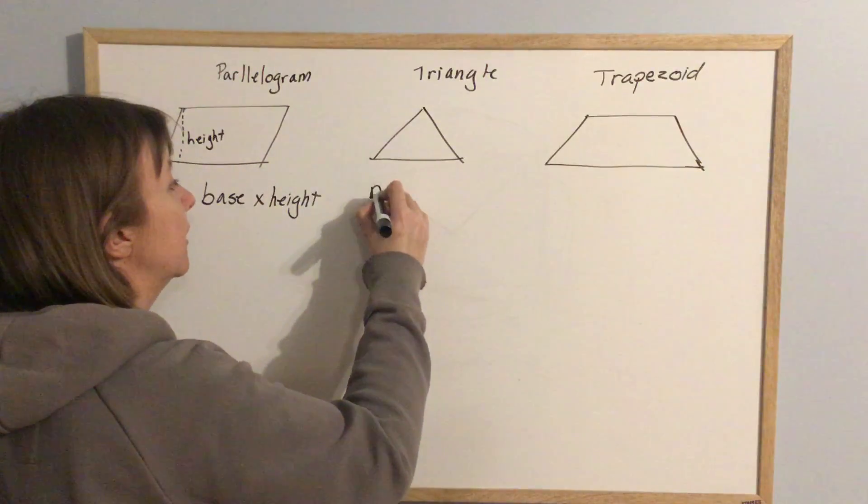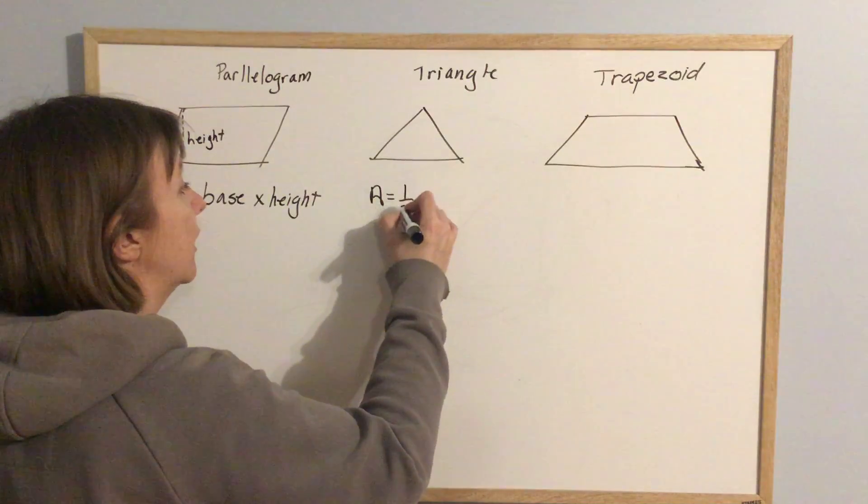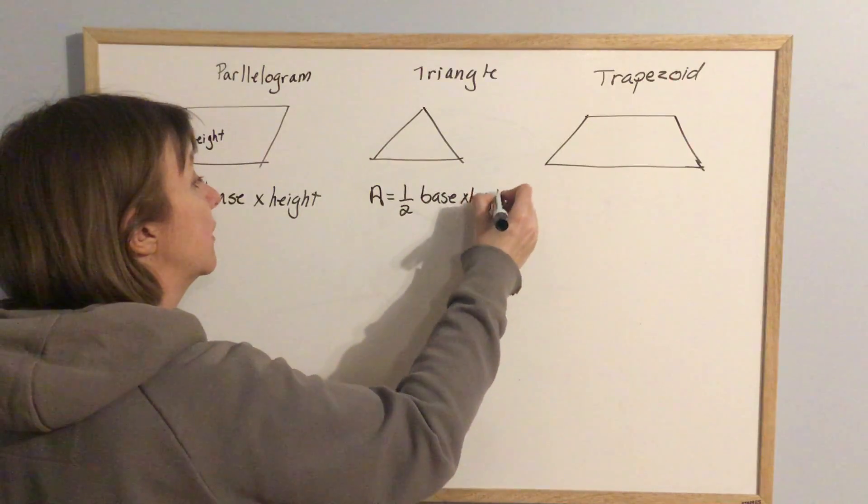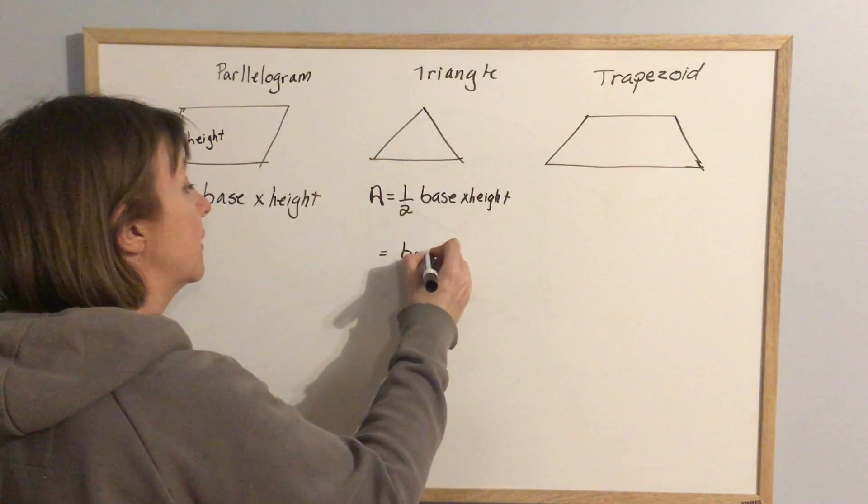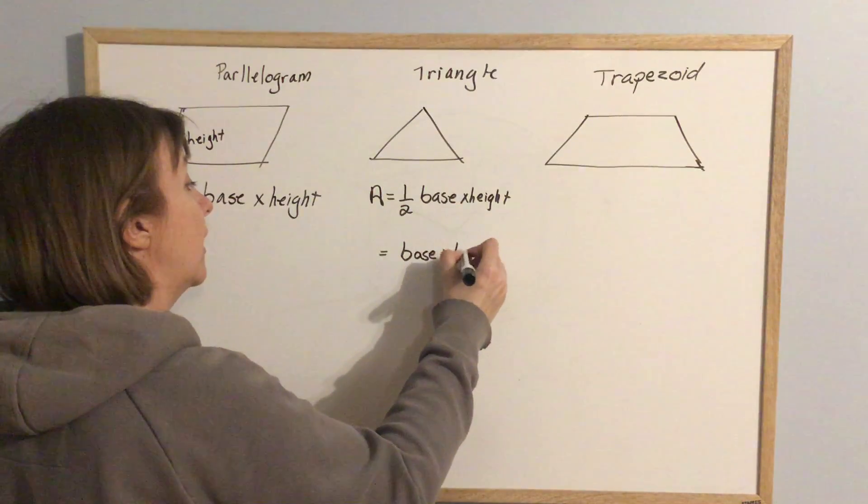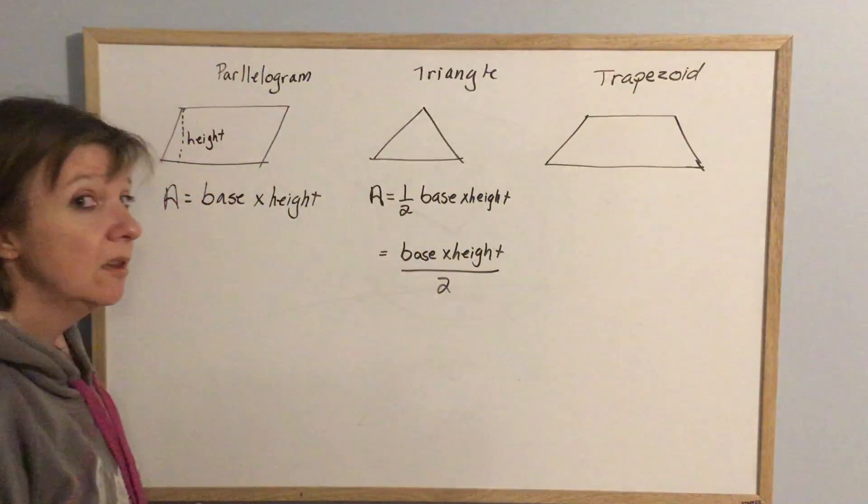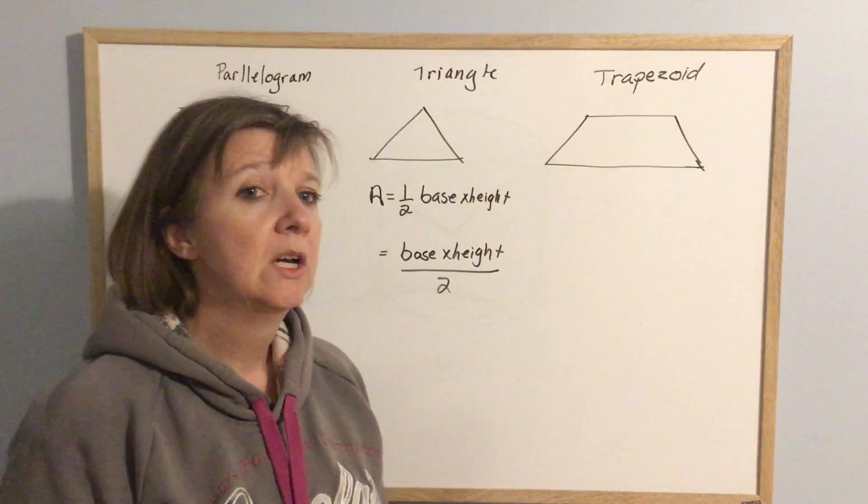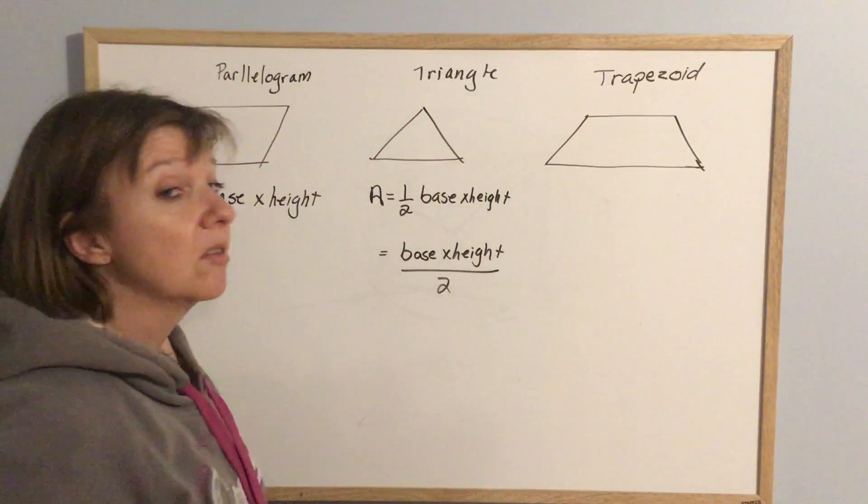Area of a triangle, you can actually write this a couple of different ways. You can call it one-half times the base times the height, or if you prefer, it is base times height divided by two. They mean the same thing. How you want it to stick in your head is up to you. It doesn't really matter. For whatever reason, this is the one that's stuck in my head.